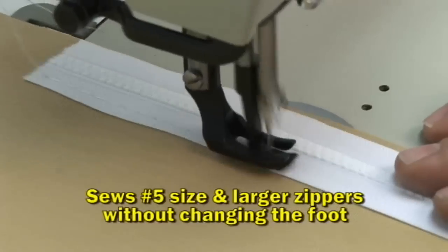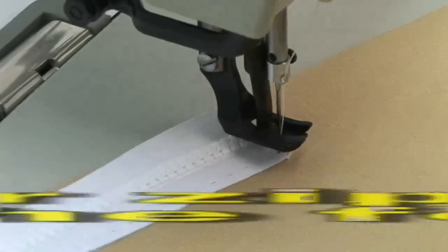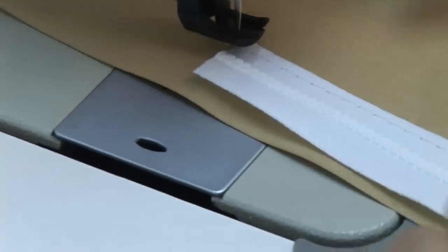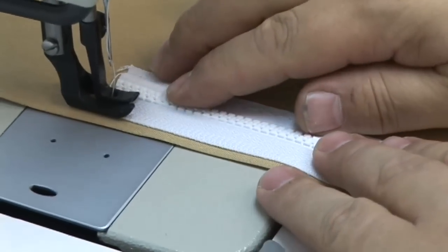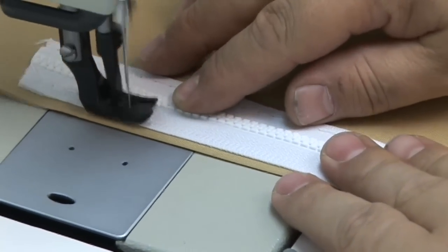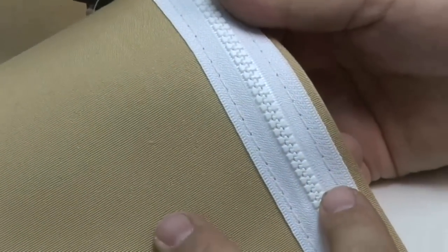This is a number 5 marine zipper. No need to change the foot or put in a roping zipper foot. Those feet are available if you'd like. You can sew close enough to a small zipper without changing the foot. This is the standard foot. Does a nice job.